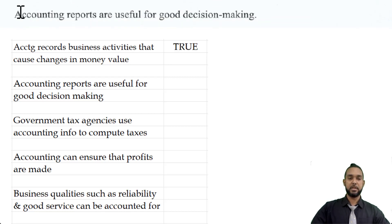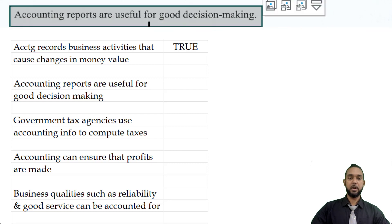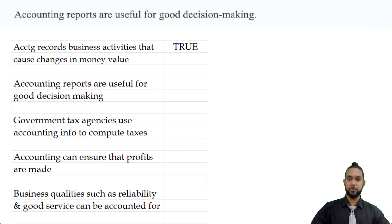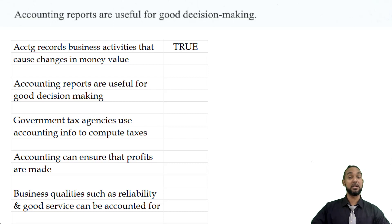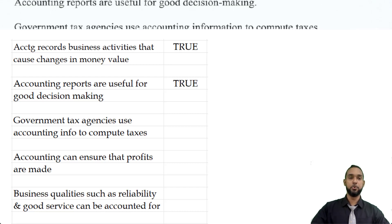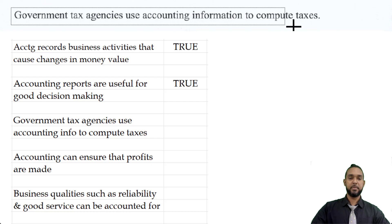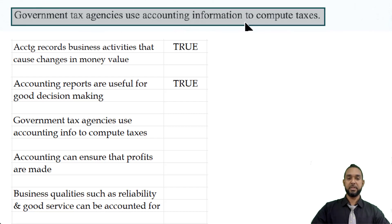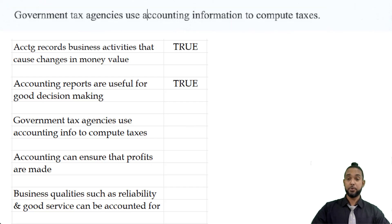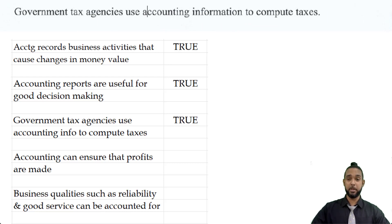The next item says that accounting reports are useful for good decision making. Yes, they are. If you don't have proper information, how are you going to make good decisions? So properly prepared and accurate accounting reports are definitely useful for good decision making — that's definitely true. Next, we have government tax agencies use accounting information to compute taxes. I could very well vouch for the fact that this is true.